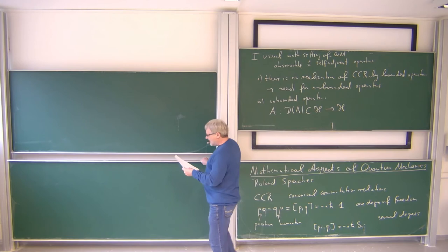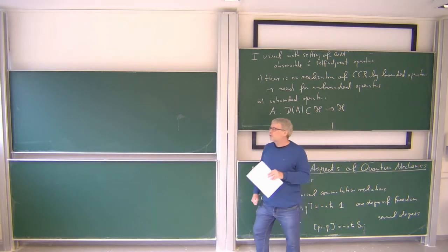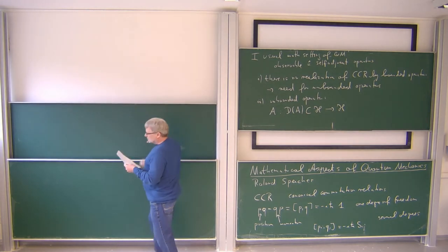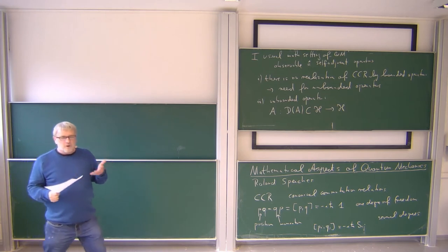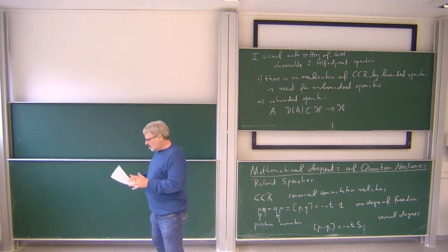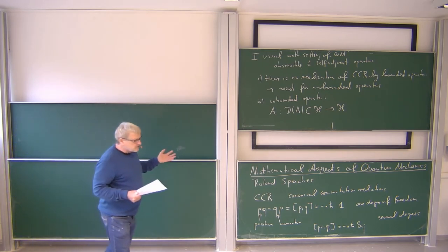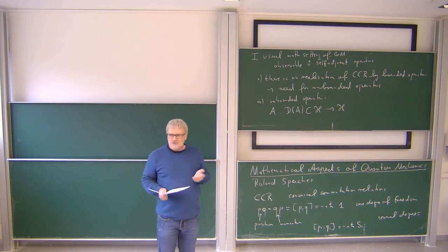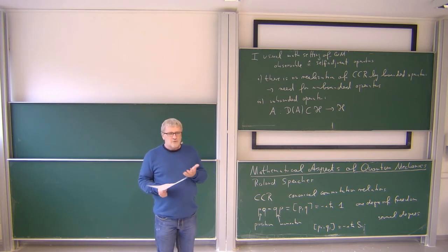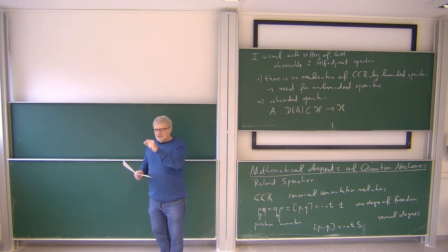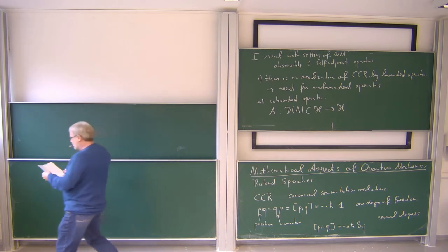The main thing we want to understand is what are self-adjoint unbounded operators. Self-adjoint, symmetric, and Hermitian — for bounded operators these are all words for the same property — but here we have to distinguish. In principle, self-adjoint means for matrices that the matrix is the same as its adjoint. For bounded operators we also know what this means: you can bring the operator from one side in the inner product to the other side as its adjoint.